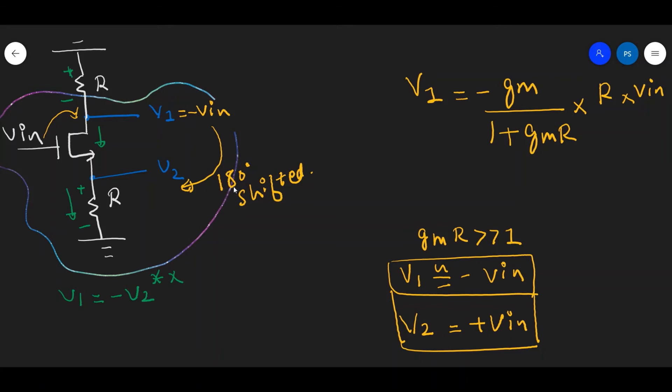The phase shifts by 180 degrees because if you look at the voltage V2, it is measured from this point to ground and the current direction is also in the same direction. So the voltage drop across this will be positive. But if you look at the voltage drop across this V1, if you look at the current direction...